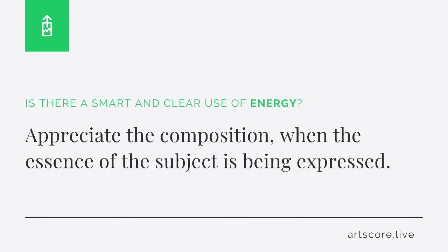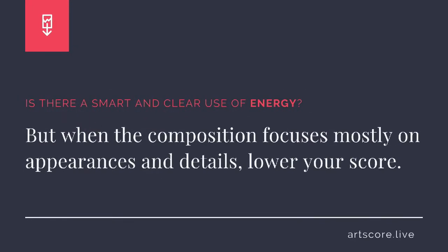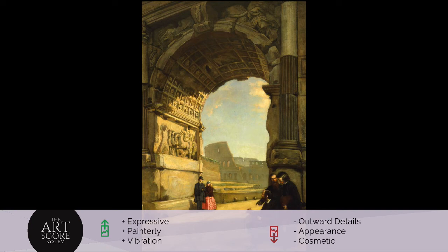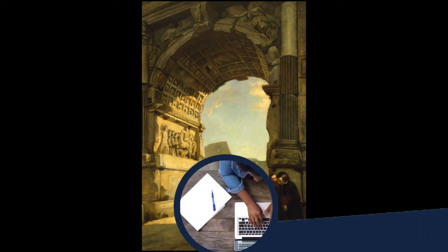Energy. Is there a smart and clear use of energy? Appreciate the composition when the essence of the subject is being visually expressed. But when the composition focuses mostly on outward appearances and details, lower your score. I scored the work a 7. I see the essence of the subject in the mark making. What's your score?